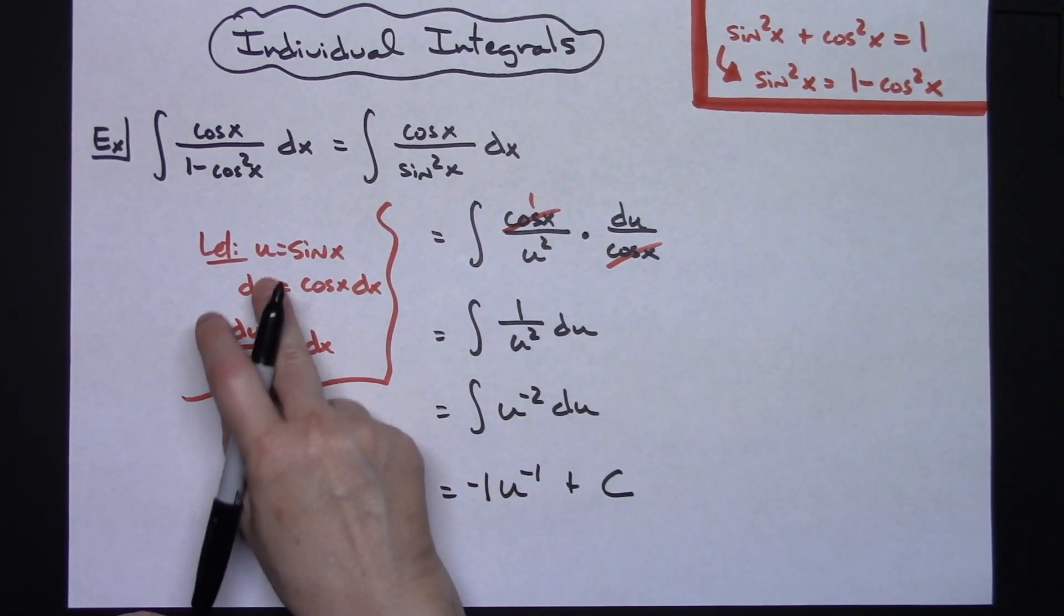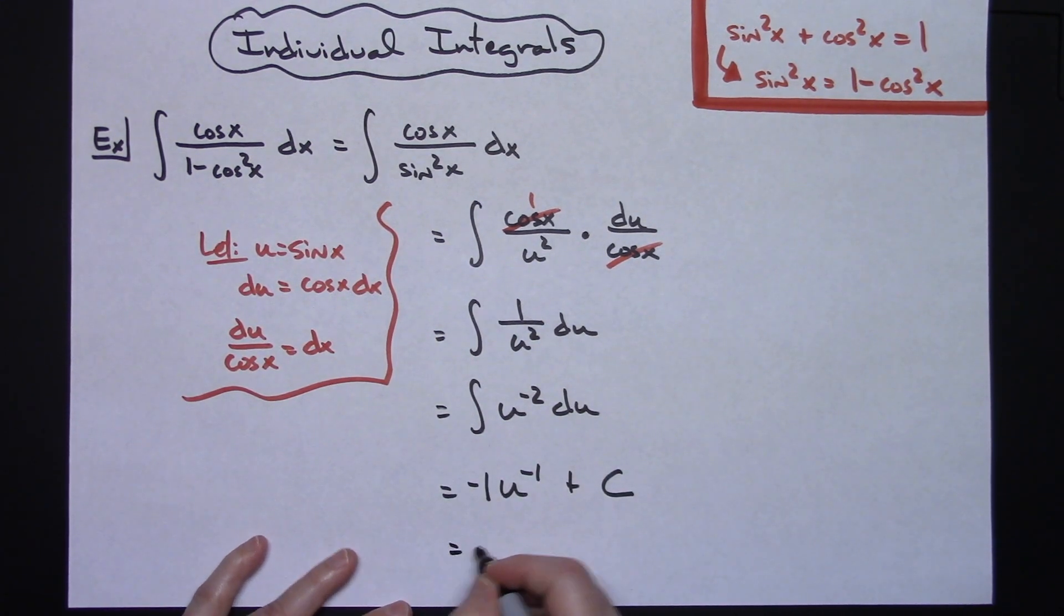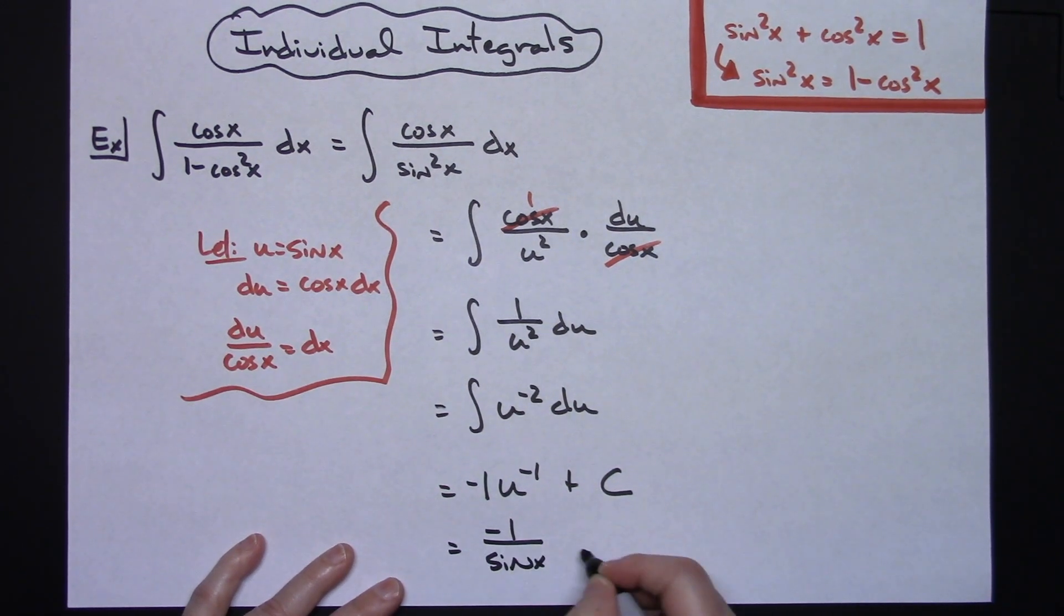Going in and substituting my u back in there. Since that is u to the negative 1 I am going to move it to the bottom. So that'll give me negative 1 over sine x plus c.